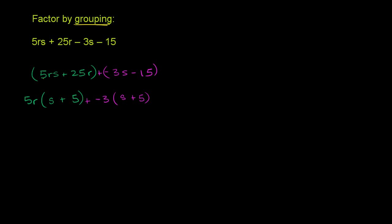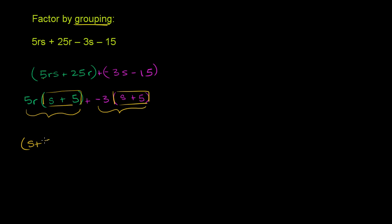Now we have something interesting. Each of these terms is the product of a monomial and a binomial. Notice both parts are divisible by s plus 5 — they're both multiples of s plus 5. So now we can factor out an s plus 5. We have 5r times (s plus 5) and negative 3 times (s plus 5). Factoring out (s plus 5), we're left with 5r from the first term and negative 3 from the second. So we get s plus 5 times 5r minus 3.